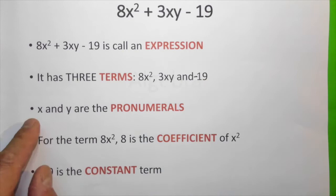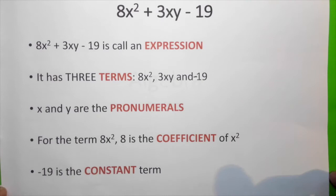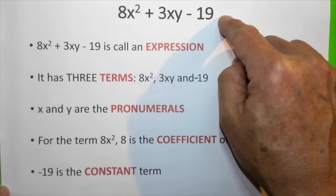x and y are actually the pronumerals. For the term 8x squared, 8 is actually the coefficient of x squared. And look at this term here, minus 19. There's no pronumerals at all and therefore it is known as the constant term.